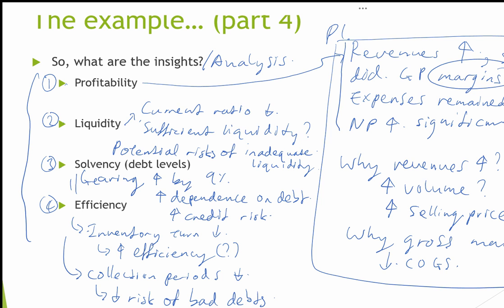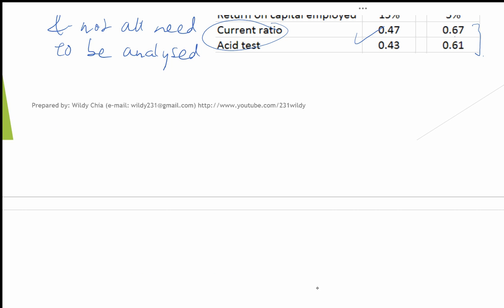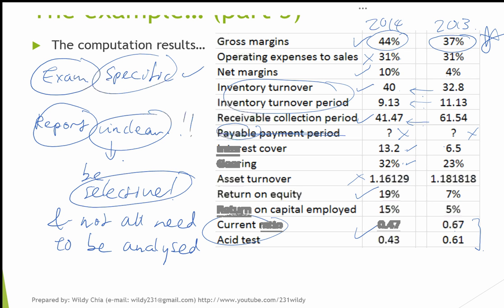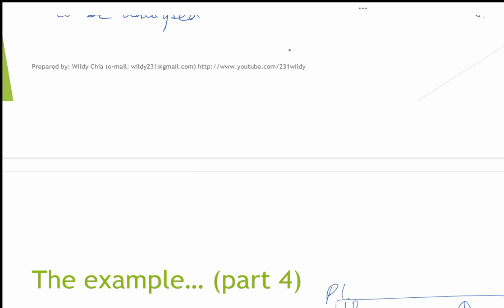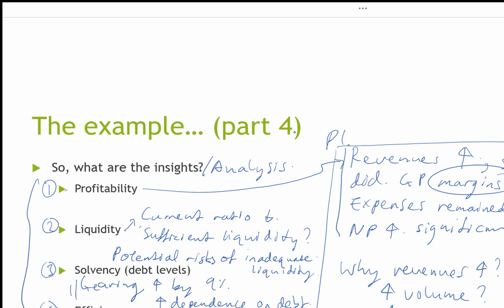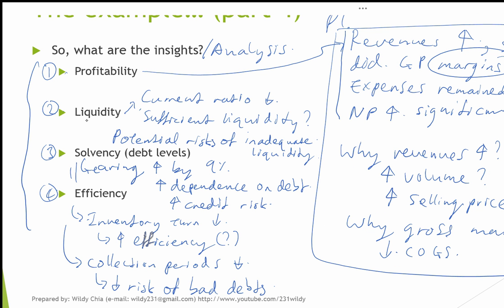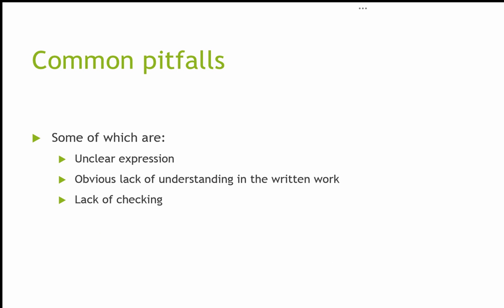What I did was simply select the ratios that were more relevant, take those more relevant ratios, bring them down into four parts, and that becomes a very simple report.